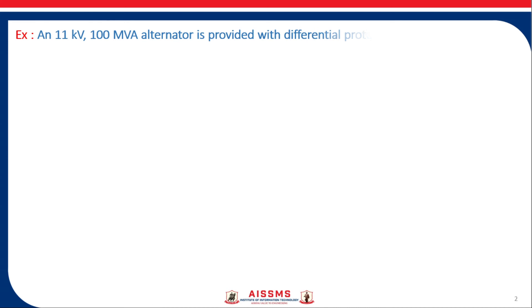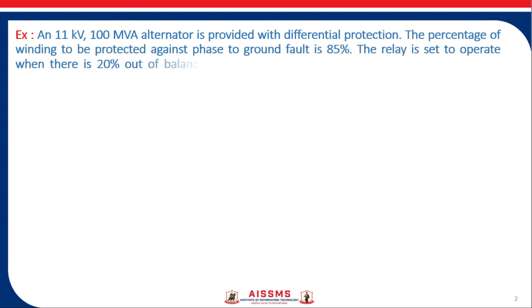An 11 kV, 100 MVA alternator is provided with differential protection. The percentage of winding to be protected against phase to ground fault is 85%. The relay is set to operate when there is 20% out of balance current. Determine the value of the resistance to be placed in the neutral to ground connection.